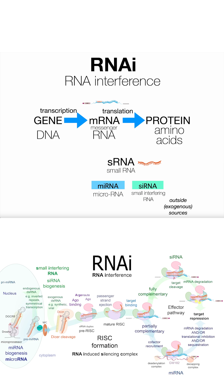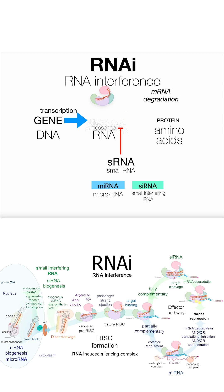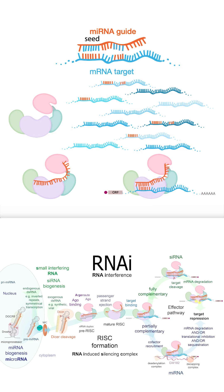These small RNAs are bound by a protein called Argonaute, which uses them as guides to find and bind to messenger RNAs with the instructions for making proteins that you want to knock down or reduce the levels of. The small RNAs contain a sequence that is complementary to the sequence of messenger RNAs in a 6 to 8 nucleotide long region of the guide called the seed sequence.